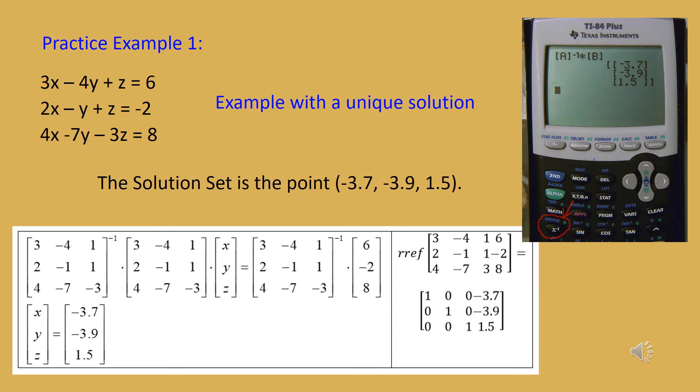On the home screen, you call up matrix A and raise it to the minus one power, which runs a program that finds the inverse of that matrix, then multiply by the column matrix B. This gives us a solution: x equals negative 3.7, y equals negative 3.9, and z equals 1.5. If there was not a unique solution, we would have gotten an error message on the calculator.